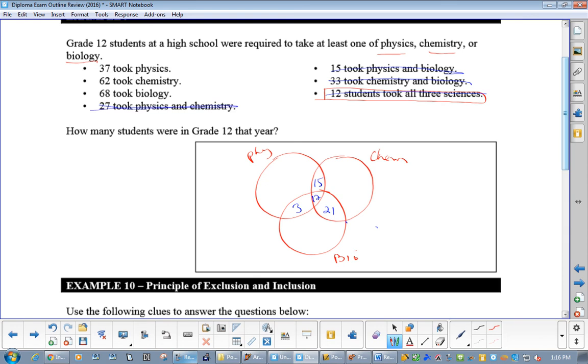It's just really working backwards. Now, it says 68 took Bio. So, make sure that you go 68 minus 21 minus 12 minus 3. You will get 32. 62 took Chem. So, just take 62 minus 15 minus 12 minus 21 would be 14. And 37 took Physics. So, we're going to minus 15 minus 12 minus 3.